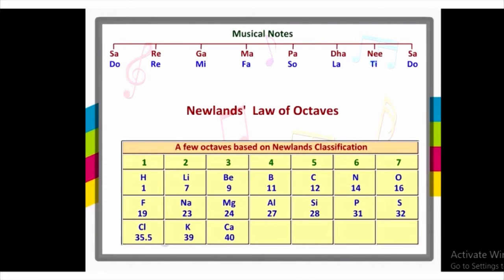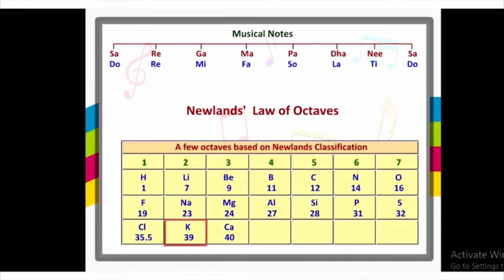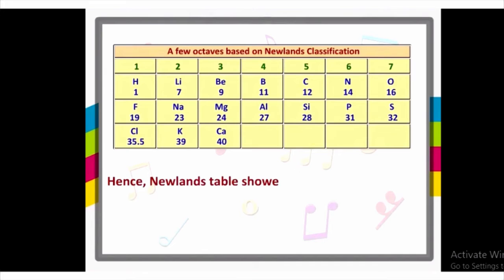This evidence supported his observation remarkably. In the first column of Newlands' octaves, the properties of hydrogen, fluorine, and chlorine were found to be the same — chlorine is the eighth element after hydrogen, and bromine is the eighth element after fluorine. Similarly, lithium, sodium, and potassium resemble each other. Hence, Newlands' table showed periodicity in elements when arranged in increasing order of atomic masses.